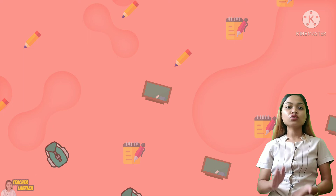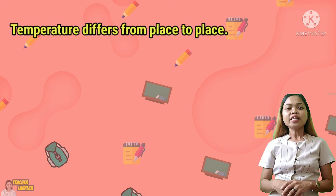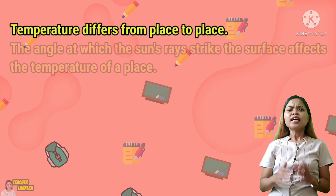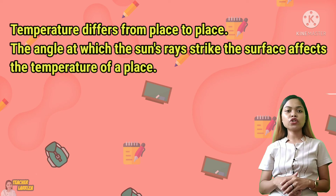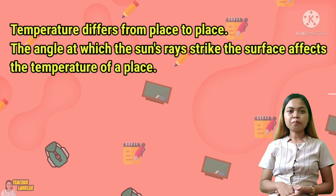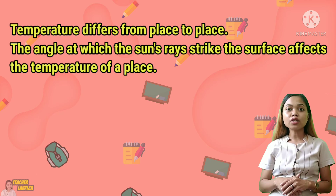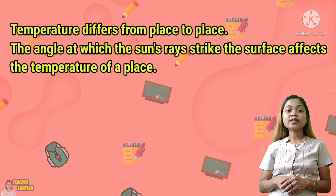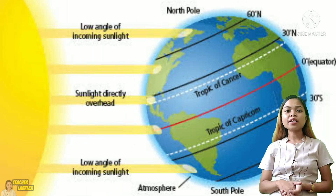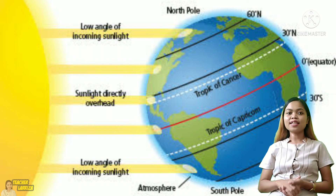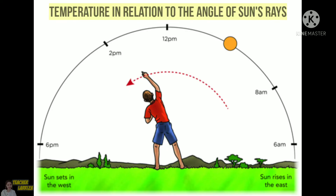In our activity, we observe how thermometers work on two different setups. As you can see, the temperature outside the house is higher compared to the temperature inside the house. The angle at which the sun's rays strikes the surface affects the temperature of a place. Ito ang dahilan kung bakit napakainit tuwing tanghali sapagkat sa oras na ito ay tirik na tirik ang araw kumpara sa umaga o hapon. Ang mga lugar na malapit sa equator ay may mataas na temperatura sapagkat ito ay direktang natatamaan ng sinag ng araw.